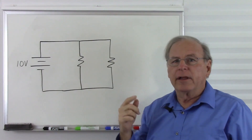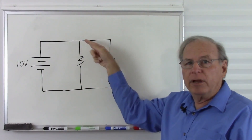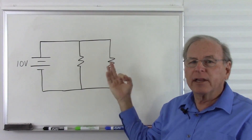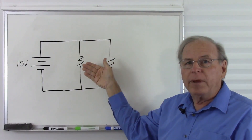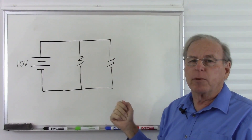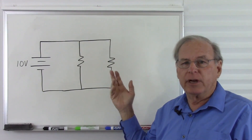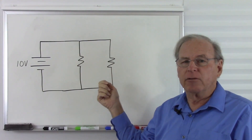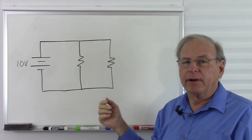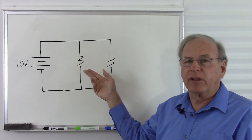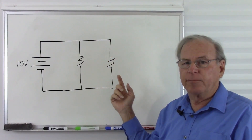The current in a parallel circuit is different through each current path unless the resistors are the same. The current will be inversely proportional to the resistor value. In other words, if the resistor value goes up, the current will go down. The higher the resistance, the less current we will have in each path.